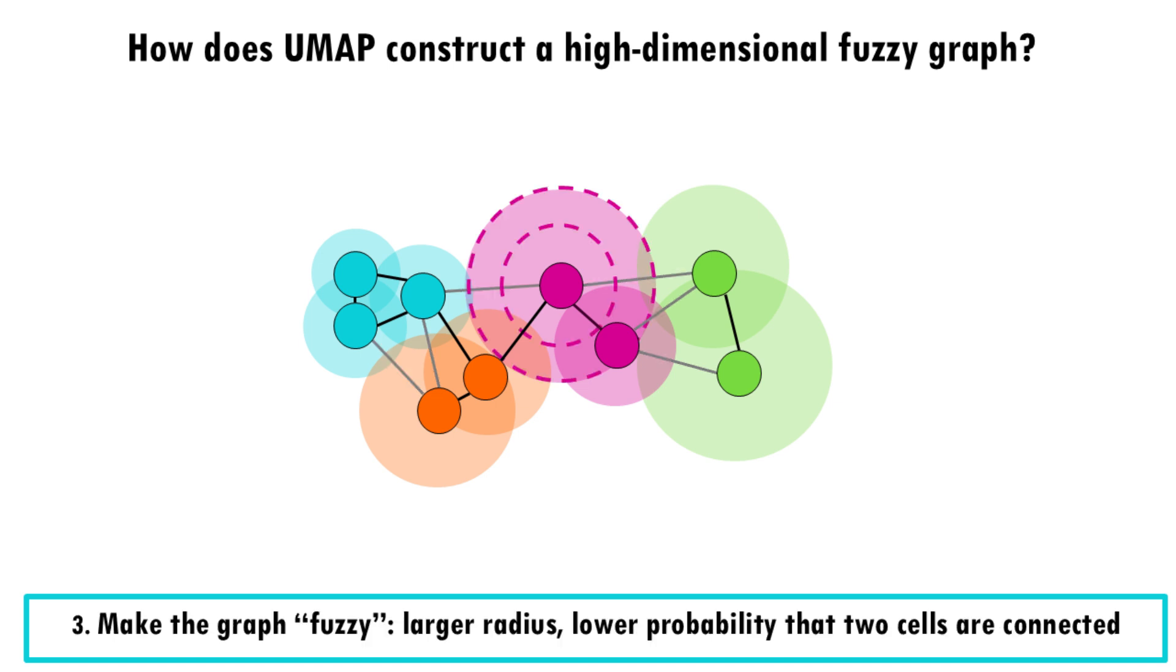But in a third step, UMAP makes the graph fuzzy by decreasing the probability that two cells are connected as the radius grows. If you check the pink cell in the middle, it's connected with high probability with the pink and orange cells, which overlap with the smaller radius, and is connected with lower probability with the blue and green cells, which overlap with a much bigger radius. Finally, UMAP makes sure that each point is connected to at least its closest neighbor.